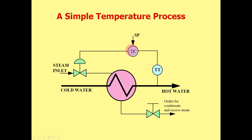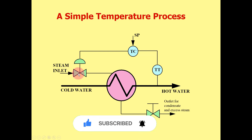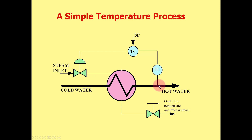The controller algorithm performs the necessary modulation, tuning, and calculation, and produces a necessary output signal to the actuator of the control valve — the final control element. This causes the control valve opening to change, which causes the necessary amount of steam to flow through the line, resulting in changes in heat exchange between the cold water and the steam line, and ultimately changing the temperature readings.